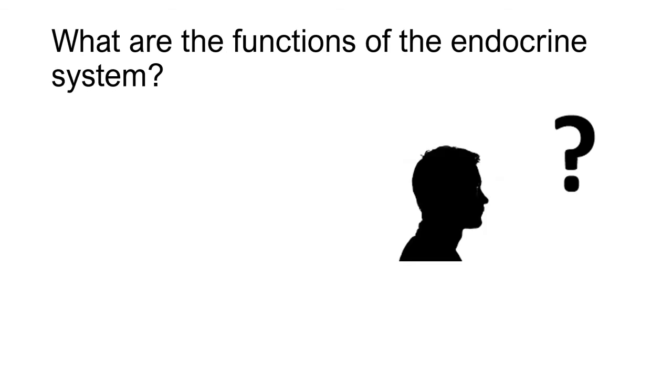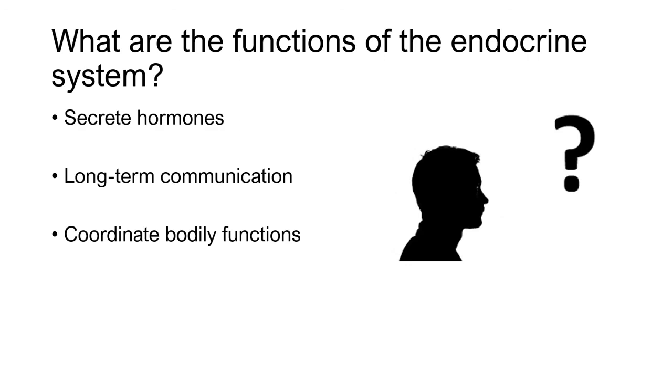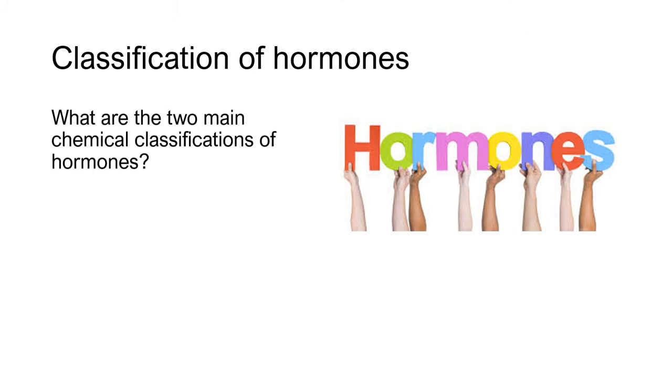But to start off, what's the function of the endocrine system? And as we talked about in human physiology, it's to secrete hormones. It's a form of long-distance communication, and ultimately it's helping to coordinate bodily functions.